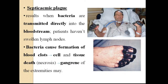Septicemic plague results when bacteria are transmitted directly into the bloodstream after flea bites. Patients develop swollen lymph nodes but there are no buboes. Bacteria cause formation of blood clots leading to cell and tissue death, and gangrene of extremities may develop.